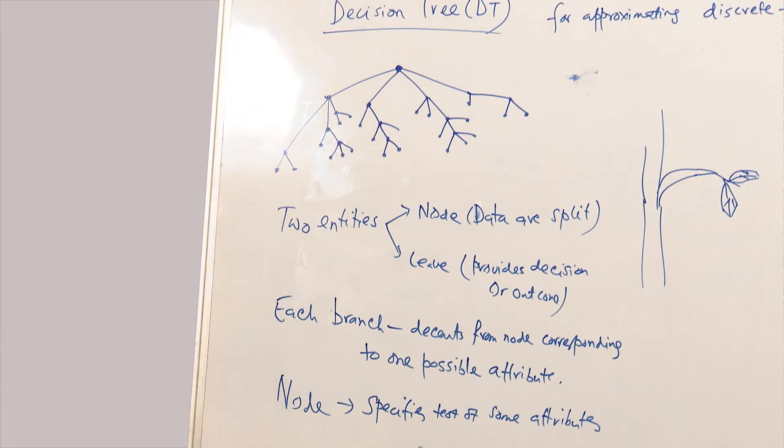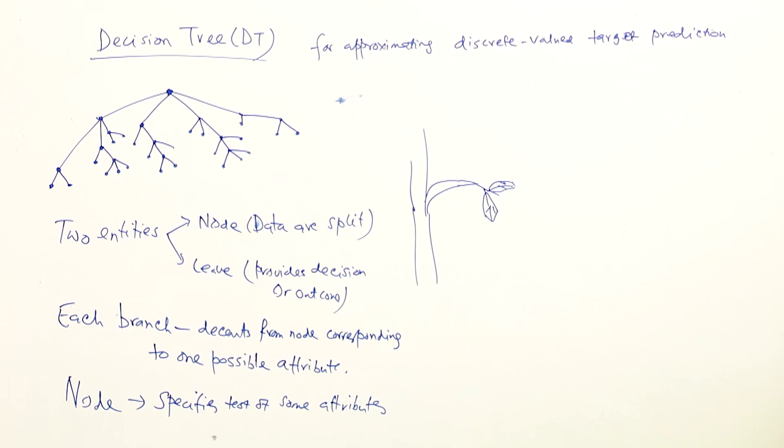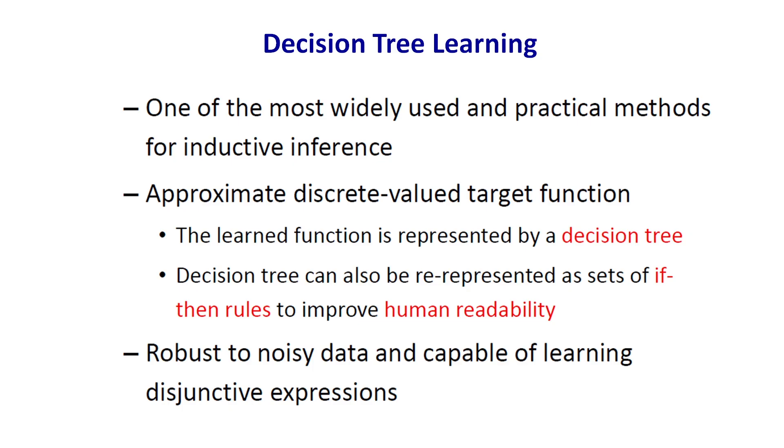Decision tree can handle both alphabetical and numerical data — both categorical data as well as numerical data. That is the routine structure of a decision tree: there is a node and a leaf. A node splits data, the leaf provides decisions or outcomes, each branch descends from a node corresponding to one possible attribute, and nodes specify the test of the attribute. Decision tree is one of the most widely used and practical methods, and it gives discrete-valued target functions. The learned function is represented by a decision tree.